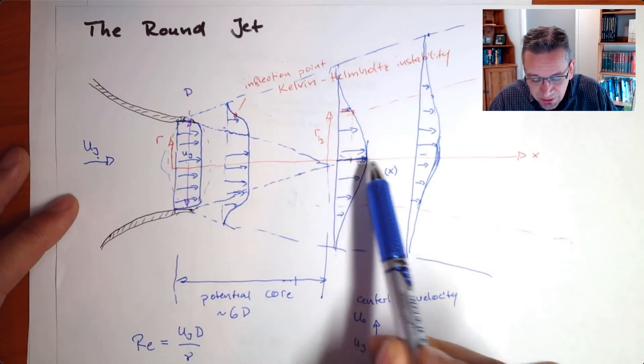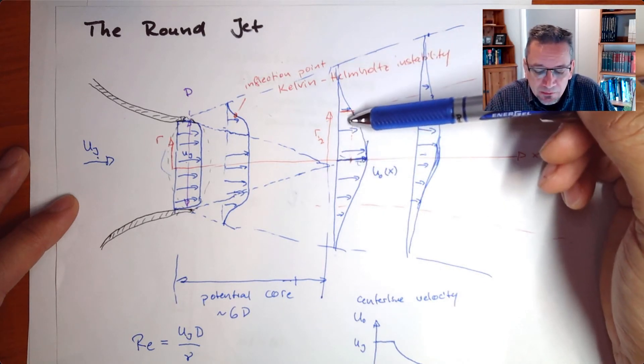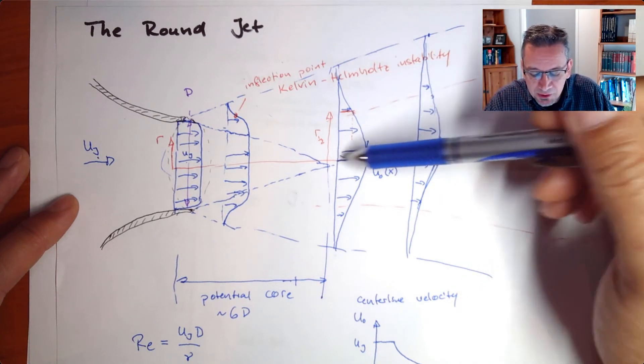The characteristic length scale we can use now is the half width of the jet that we defined before, and the characteristic velocity we can use now is the centerline velocity.